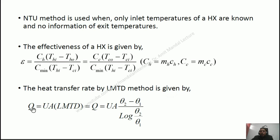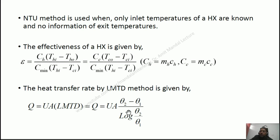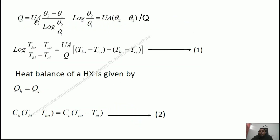We also know that the heat transfer rate by the LMTD method is given by Q equals U·A·LMTD, where U is the overall heat transfer coefficient, A is the associated area through which heat is transferring, and LMTD is the logarithmic mean temperature difference given by (theta_2 minus theta_1) divided by ln(theta_2 / theta_1). For a parallel flow heat exchanger, theta_2 equals T_HO minus T_CO and theta_1 equals T_HI minus T_CI.